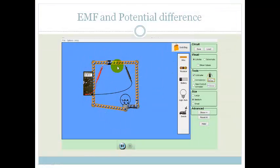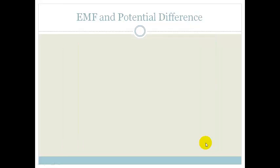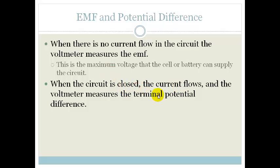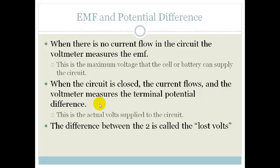First of all, the one that we measure when we are across the battery and it is open is called the EMF. Whereas, when we close the switch and we measure, we're finding the potential difference. So when there's no current flowing in the circuit, the voltmeter measures the EMF. This is the maximum voltage that the cell or battery can supply the circuit. However, when the circuit is closed, the current flows and the voltmeter measures the terminal potential difference. That is the actual volt supplied to the circuit. There's a big difference between what is actually supplied to the circuit and what the maximum voltage is that the cell can supply. EMF, maximum voltage. Terminal potential difference, what actually is supplied to the circuit. The difference between the two is called the lost volts. And, the lost volts are due to the internal resistance of the battery.